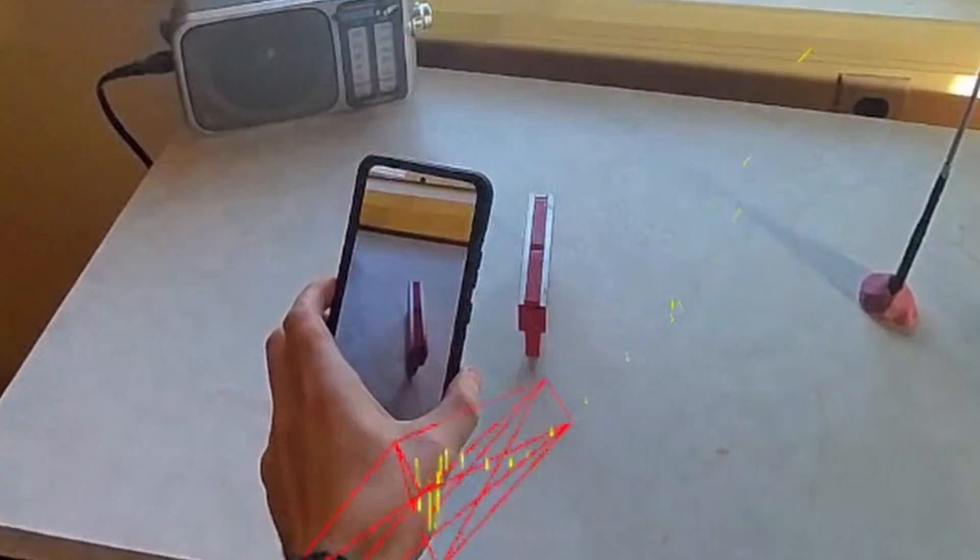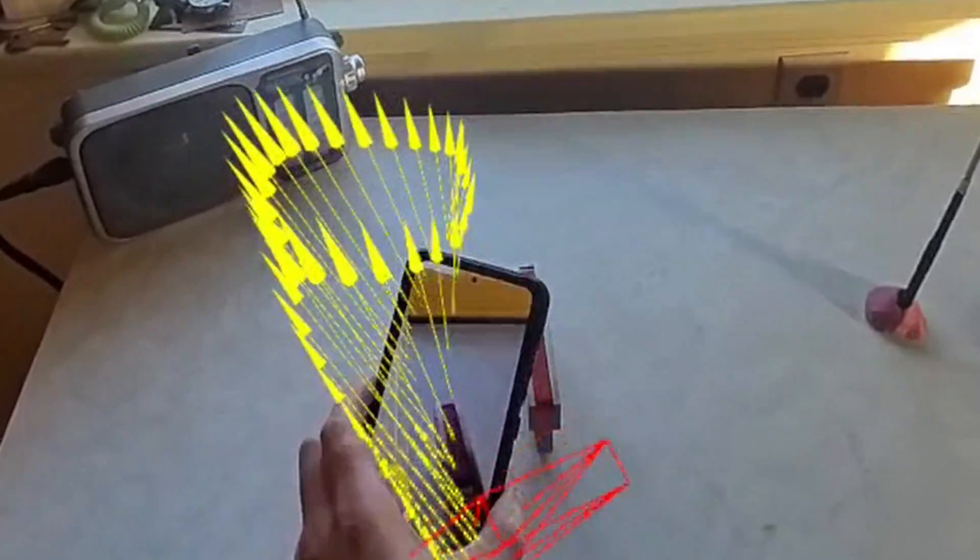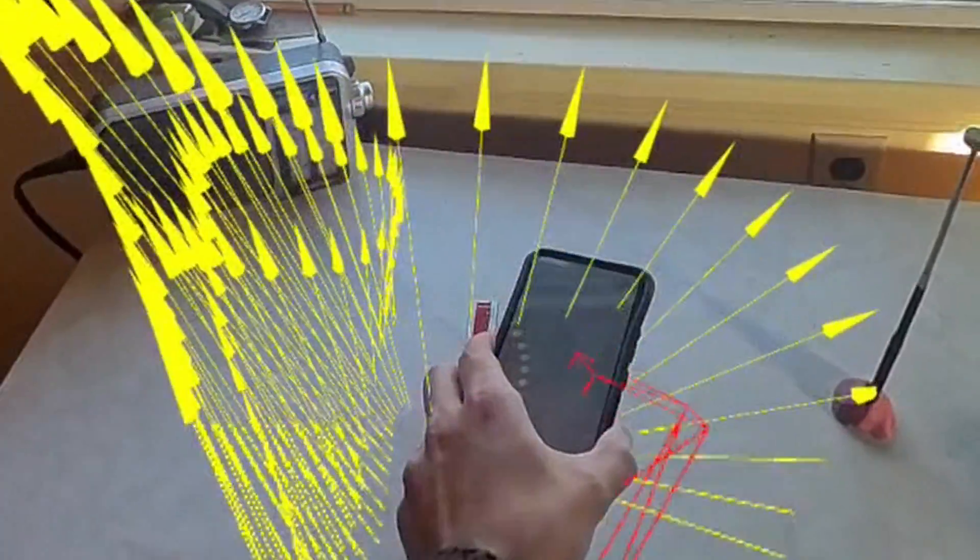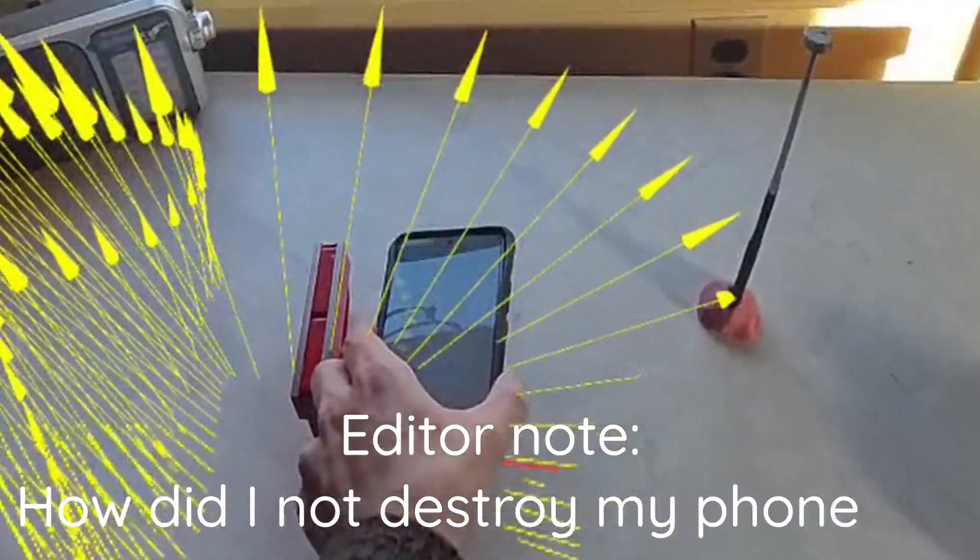Today we're going to visualize magnetic fields with a Quest 3. The idea is to take the magnetometers from cell phones and send that information through a web socket into the goggles so we can see the magnetic fields and hopefully visualize some interesting things.